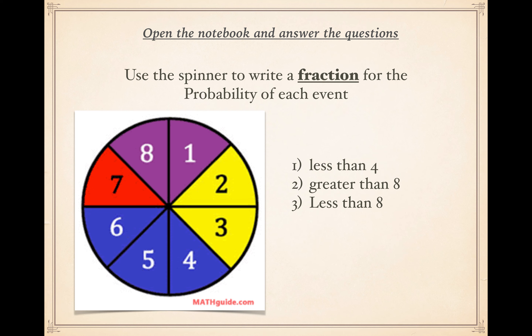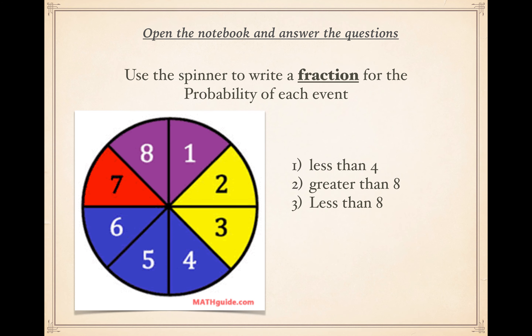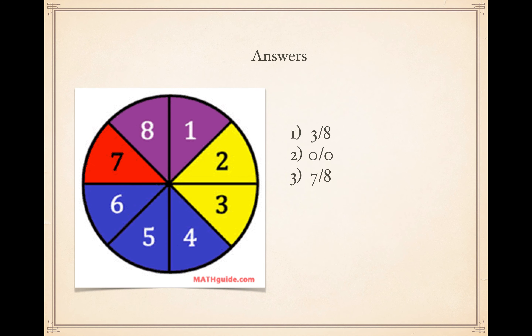The first answer is three over eight, because there are three sections of blue. The next one — greater than eight — there are no numbers greater than eight, so it's zero over zero, meaning zero chance or impossible. Then less than eight: we have one, two, three, four, five, six, seven — so seven over eight. It's quite likely we would get a number less than eight. Pause to check your answers if you need more time.